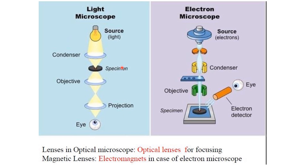This image shows the difference between the light microscope and the electron microscope. In a light microscope we use light, and using our eye we can see objects of a few micrometers. In an electron microscope we can see up to a few nanometers or a few angstroms. The lenses used in optical microscopes are optical lenses for focusing, whereas in electron microscopes, electromagnets are used to focus the electron beam.